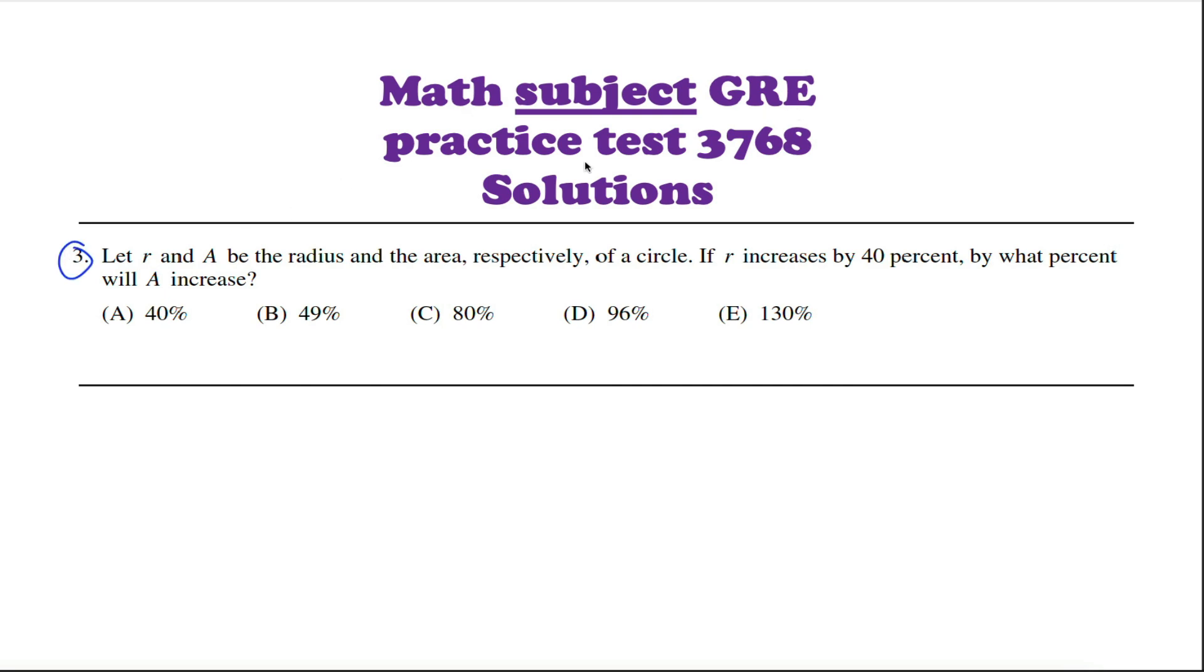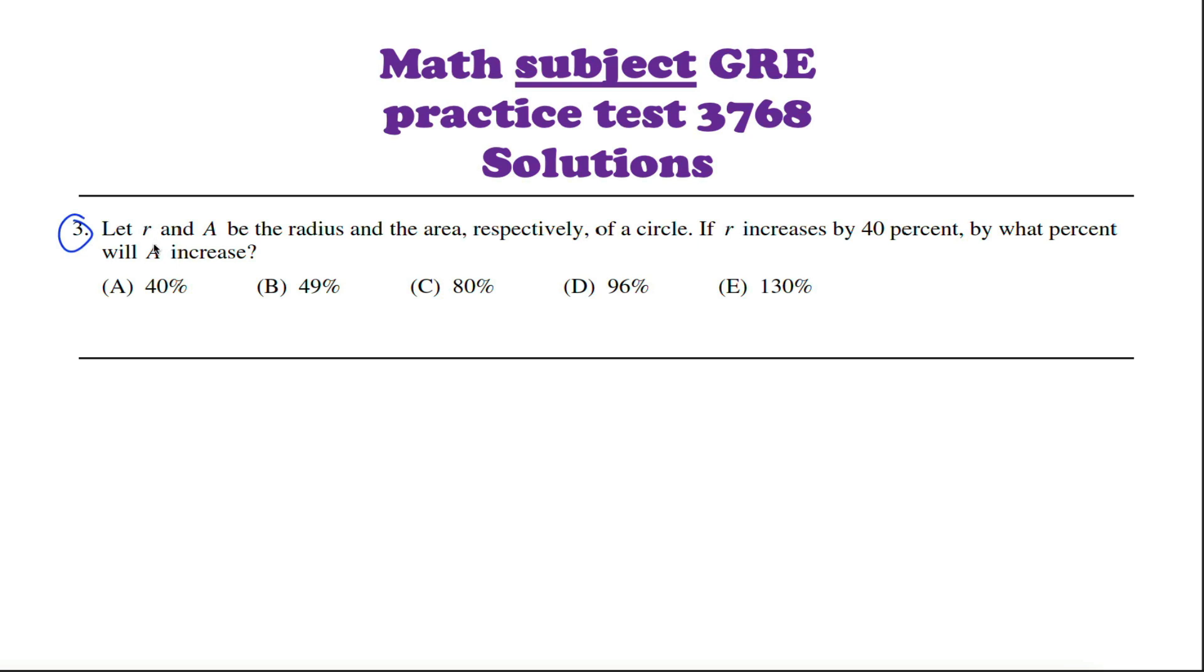All right, here's question three on the Math Subject GRE Practice Test. This is test 3768. What we're told are that R and A are the radius and area of a circle. Hopefully you're comfortable with the area of a circle being equal to pi times the radius squared. And what we're being asked is if R increases by 40%, by what percent will A increase?